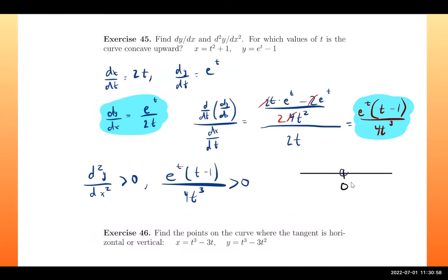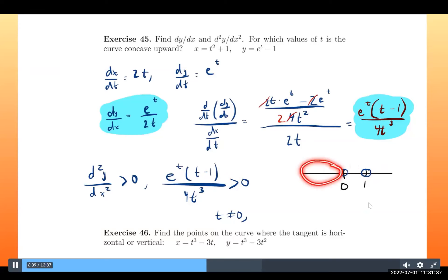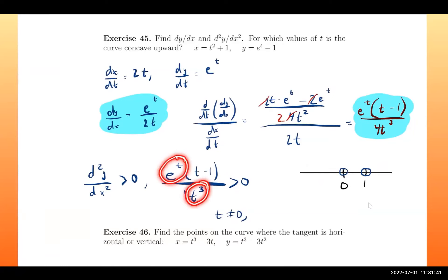The function is undefined at t=0, so we place an open circle there. At t=1, the second derivative equals zero, which is not greater than zero, so that's also an open circle. We test t=−1: e^t is always positive, (t−1) is negative, and 4t³ is negative, so negative divided by negative is positive — true.